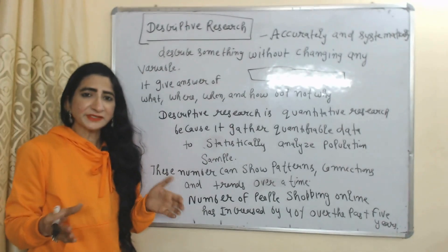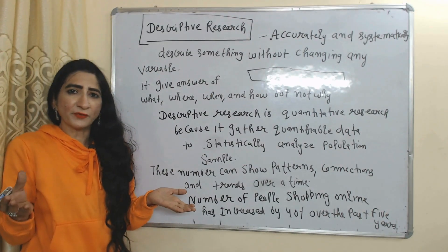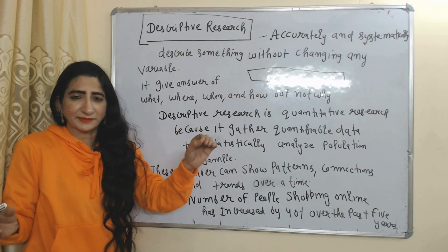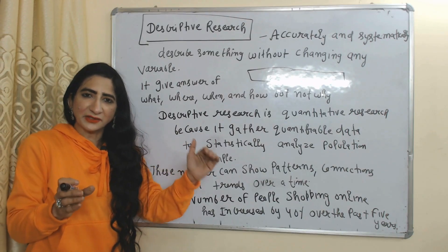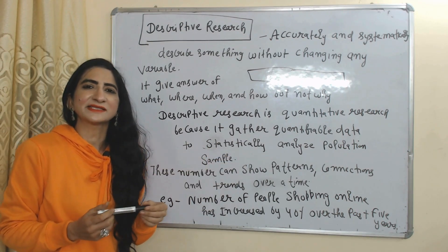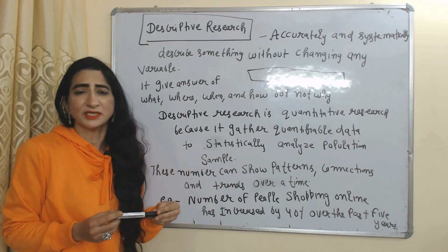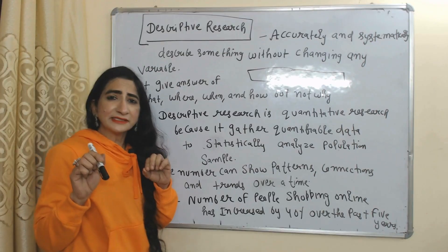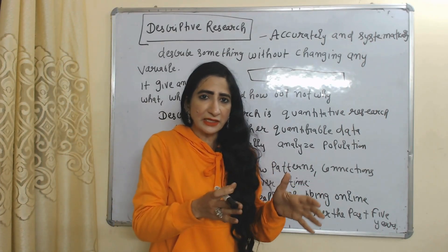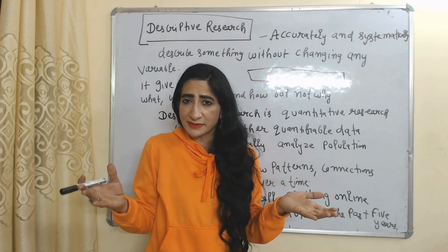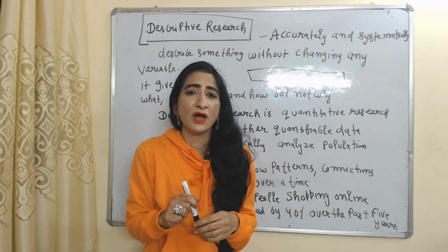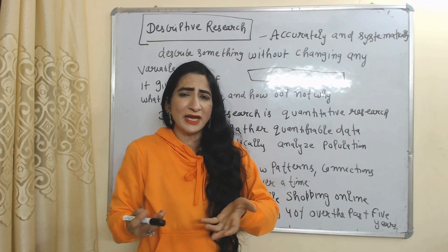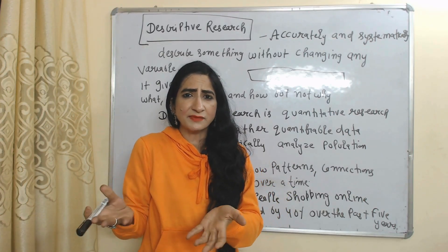The first method of quantitative research is descriptive research. Descriptive research accurately and systematically describes something without changing any variable. Under descriptive research, we describe something as it is, without manipulating any variable.